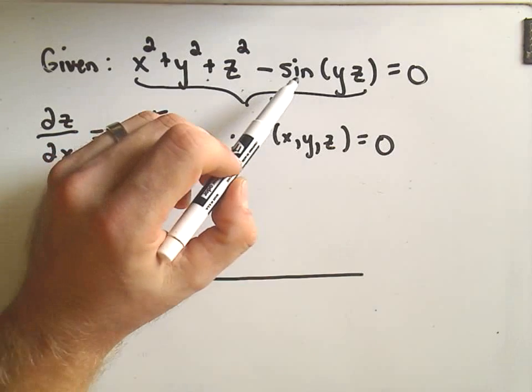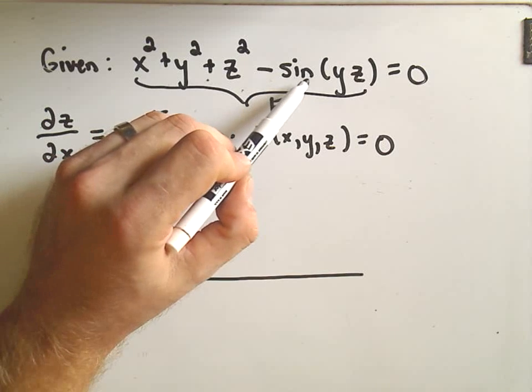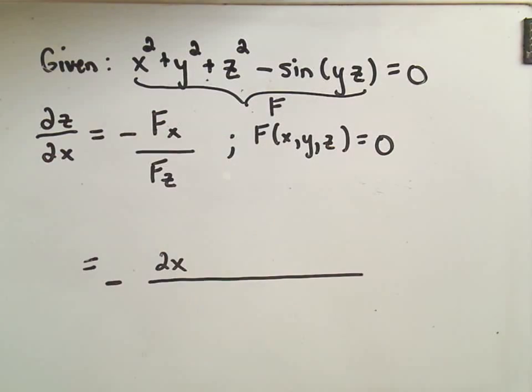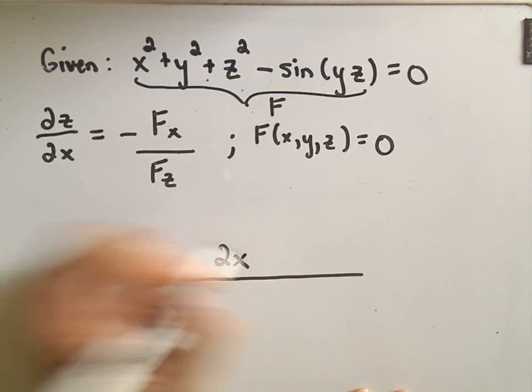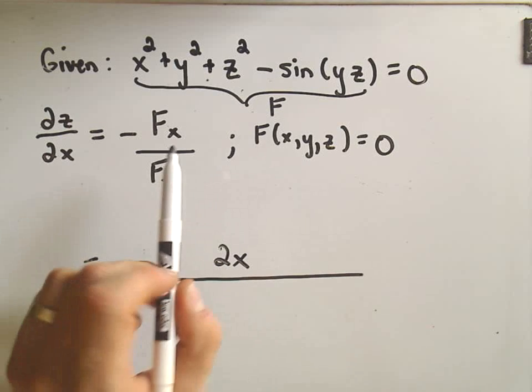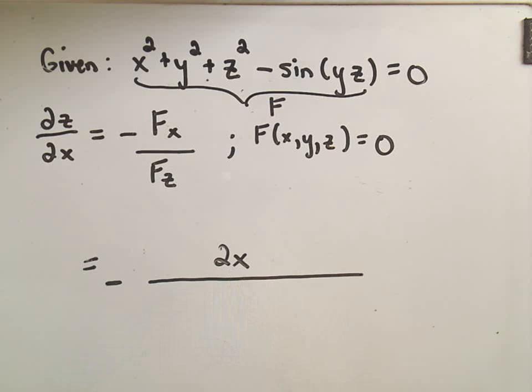And since y and z are like constants that means, well, sine of yz is a constant, so the derivative of that is also zero. So I left myself some room, but it turns out the derivative of the partial derivative with respect to x is simply going to be 2x.